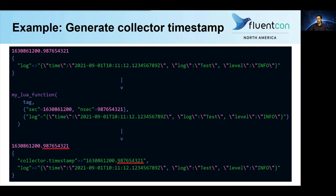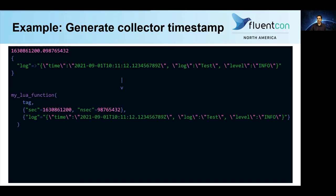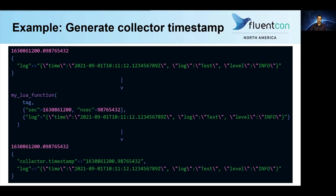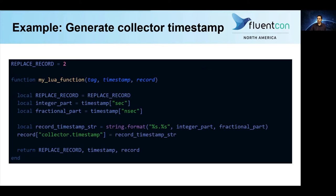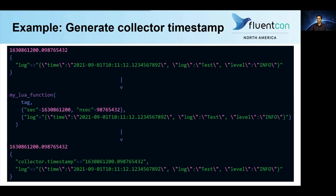This looks good, but there is a subtle bug in this code. To demonstrate, let's try this again with a different record timestamp. Just like before, Fluent Bit calls the Lua function, passes in the record timestamp as a table, and the Lua function injects it into the record as collector_timestamp. However, notice that this collector_timestamp does not match the record timestamp — specifically, it is missing the leading zero in the fractional portion. This is because the fractional portion is passed in as an integer, which means any leading zeros get dropped. So let's fix this bug. Instead of including the fractional part in the timestamp string right after we extract it, let's first modify the fractional part such that if it contains less than nine digits, we pad it with leading zeros. We then include that padded fractional part in the timestamp string. We can see that the collector_timestamp now includes the leading zero and is once again a perfect match for the record timestamp.